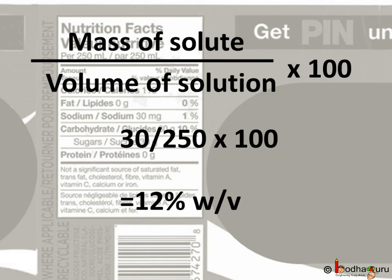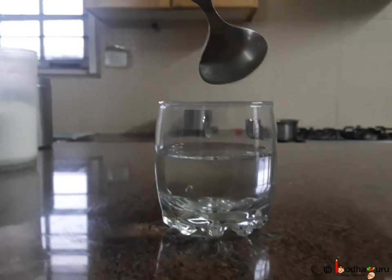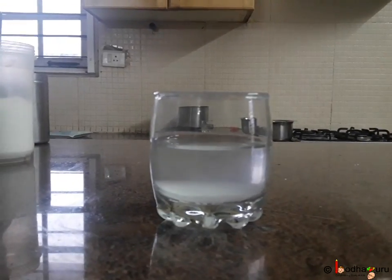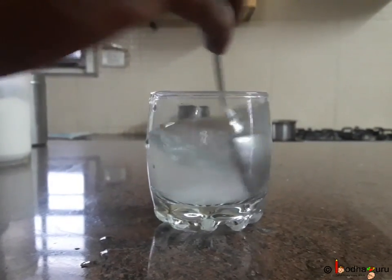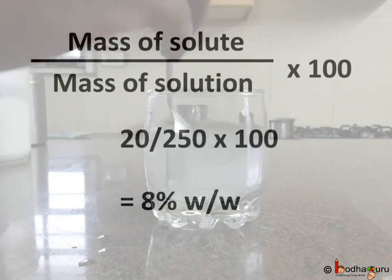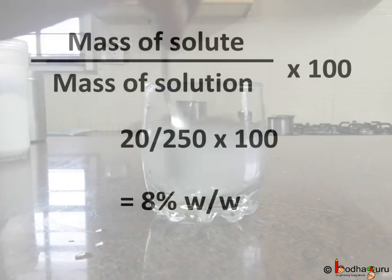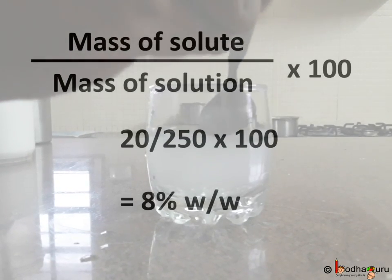Generally, concentration of solution is given in W/V or W/W. Sometimes we also see V/V written on juice bottle labels. W/W means mass of the solute divided by mass of the solution, multiplied by 100. For example, there is 20 grams of salt in 250 grams of salt water. So the W/W concentration is 20 divided by 250 multiplied by 100, which equals 8 percent W/W.